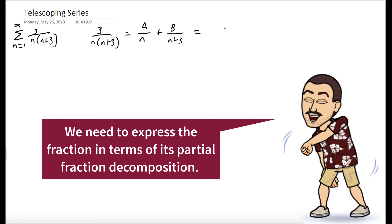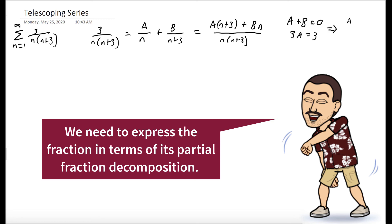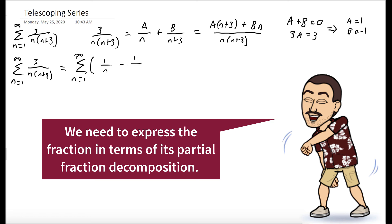The first thing we should do is express our fraction in terms of its partial fraction decomposition. When we work that out, we'll see that 3 over n times n plus 3 can be written as 1 over n plus negative 1 over n plus 3. We'll have the system of equations a plus b equals 0 and 3a equals 3, so we get a equals 1 and b equals negative 1. So our sum from n equals 1 to infinity of 3 over n times n plus 3 is equal to the sum from n equals 1 to infinity of 1 over n minus 1 over n plus 3.